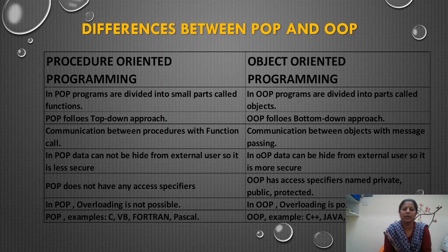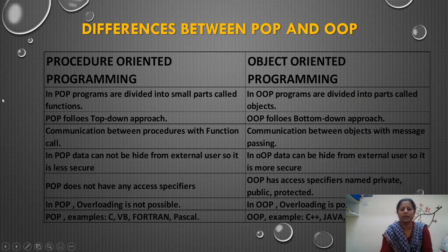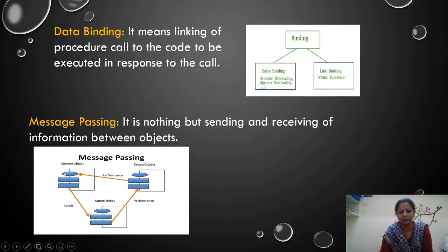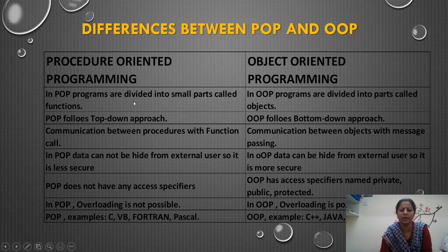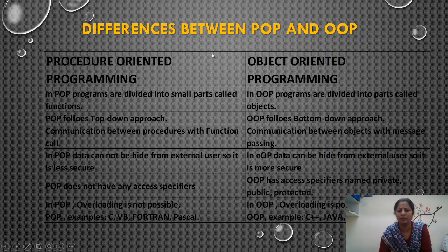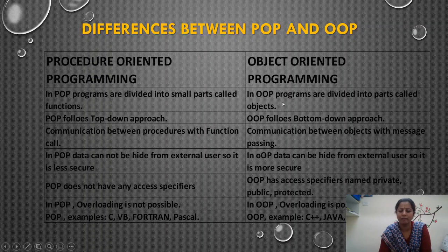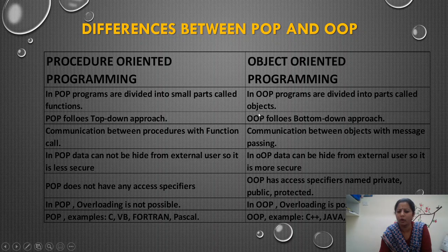Differences between POP — that is procedure oriented programming — and object oriented programming. In procedure oriented programming, data is divided into small parts called functions. This is very important for Viva, two marks, as well as your five-mark question. In object oriented programming, the programs are divided into objects.